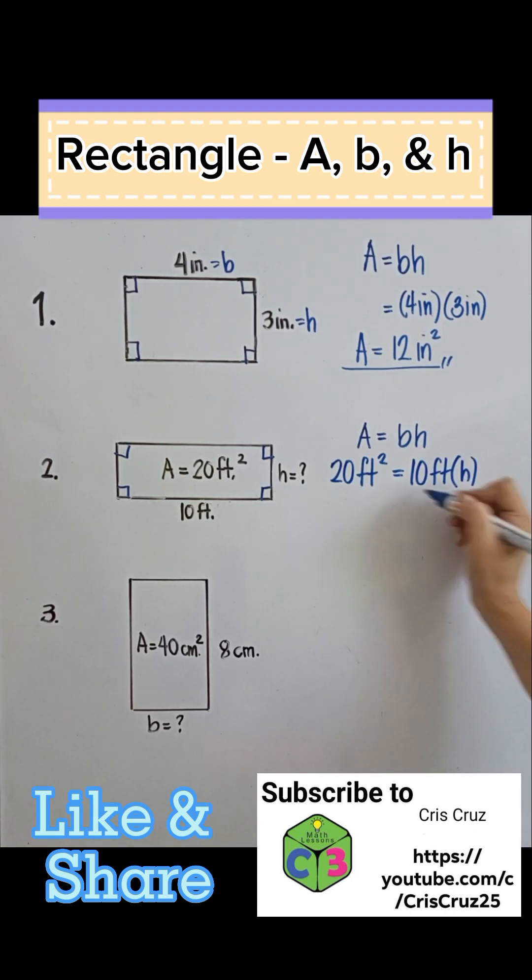To solve for the height, we just have to divide both sides by 10 feet. So this 10 feet will be cancelled out, leaving us H.